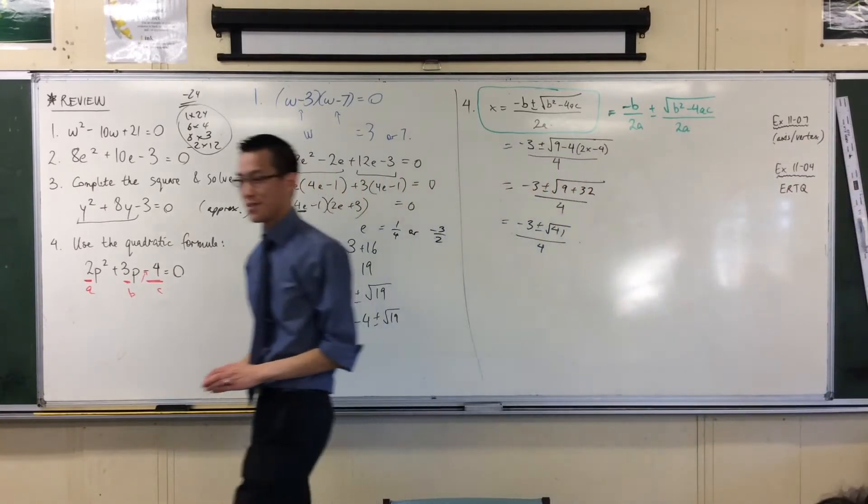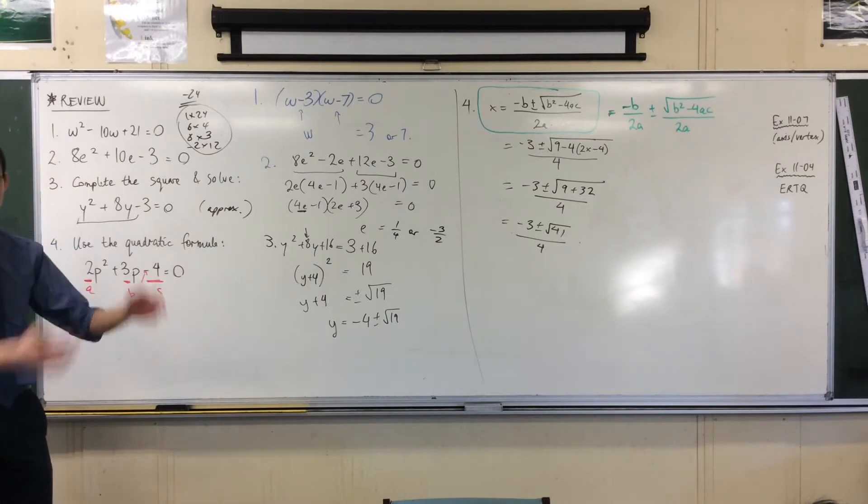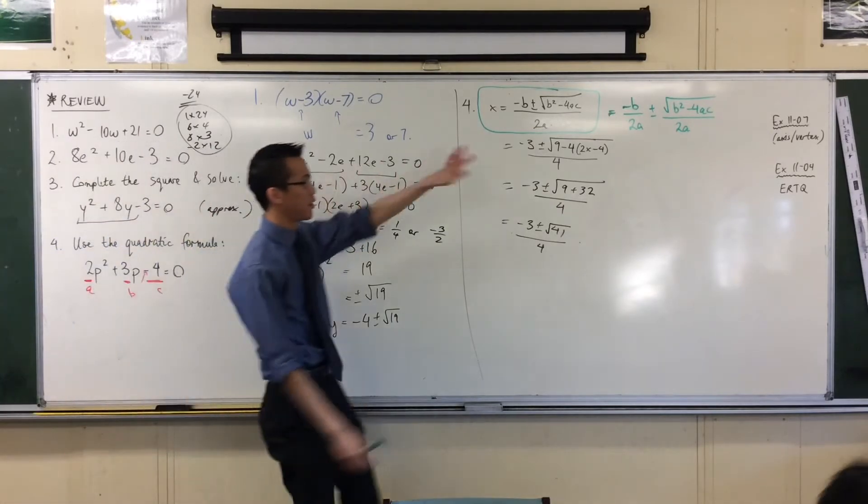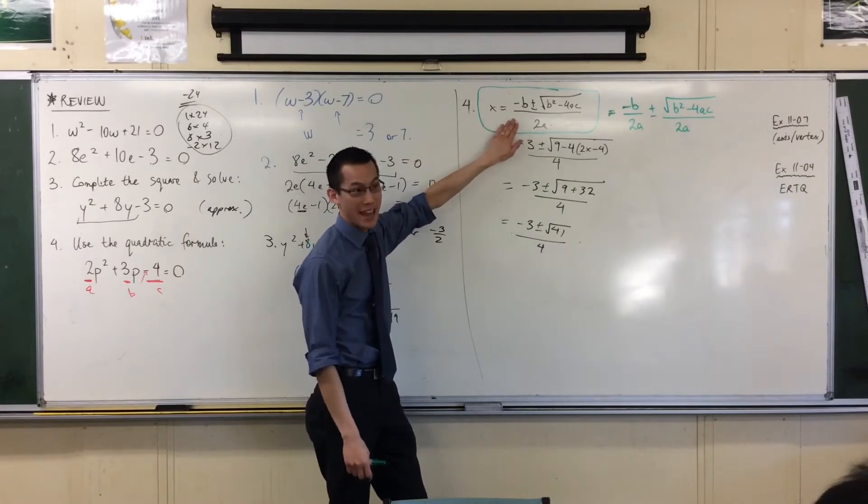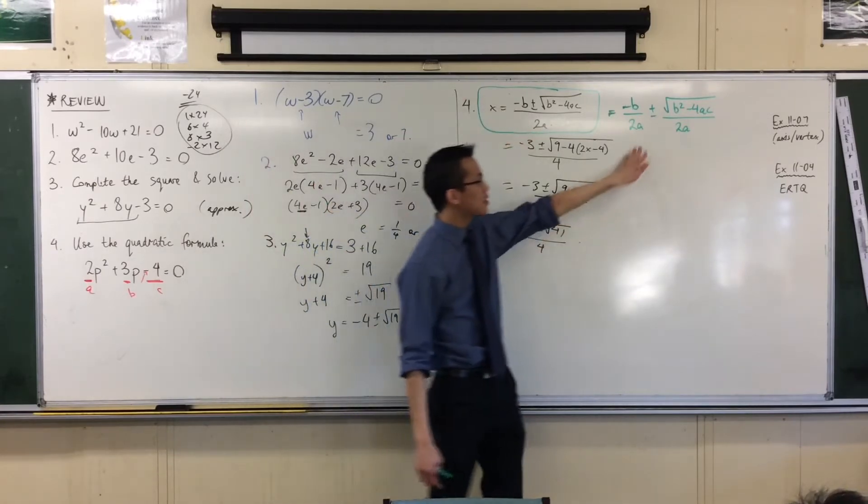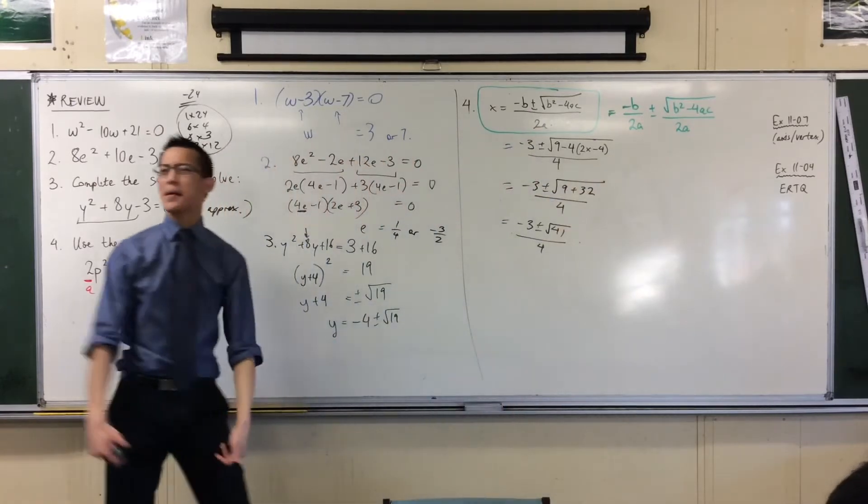Now if this is the same book that you were using last term, you will actually have the lesson where we derived this result. We started from ax squared plus bx plus c equals zero, and then this is where we ended. There was lots of algebra to get there. Now this is actually one of the lines we had. So why am I going backwards?